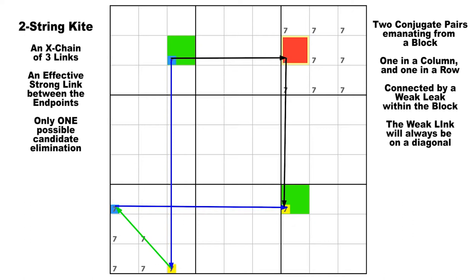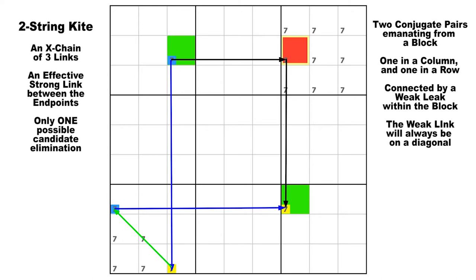Thinking of it as a kite will help you identify it. In a two-string kite, the two conjugate pairs will always connect within a block, so the tail of the kite will always be restricted to that block. The elimination cell will always be at the tip of the body of the kite — the opposite end from the tail. The two weakly-linked candidates in the block will always be on a diagonal.